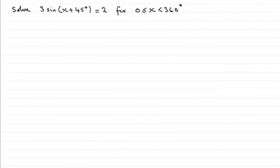Now for this first part we've got to solve this equation 3 sin(x + 45°) = 2 for x greater than or equal to 0 degrees but less than 360 degrees.